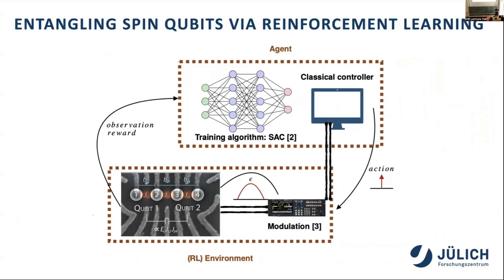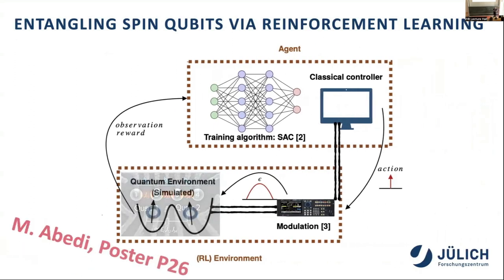We also want to use reinforcement learning to entangle qubits in other platforms. For semiconductor qubits, there is a poster by Mohamed Abidi in which he uses a neural network to optimize gate operations with spin qubits in quantum dots. This is more model-free than other implementations we have discussed, and it enables greater robustness — resilience of the algorithm with respect to external disturbances.